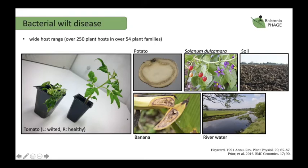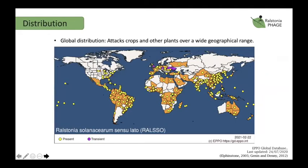With bacterial wilt disease it produces wilt-like symptoms and the plant will subsequently die. Ralstonia has a global distribution and it's found in both temperate and hotter Mediterranean-type regions. On the distribution map, a yellow dot indicates presence in a country and a purple dot indicates a transient presence.